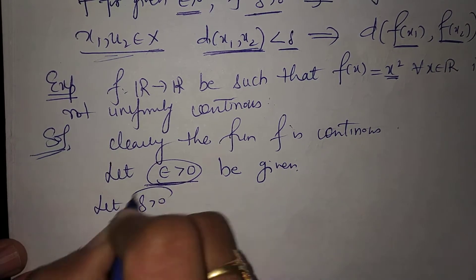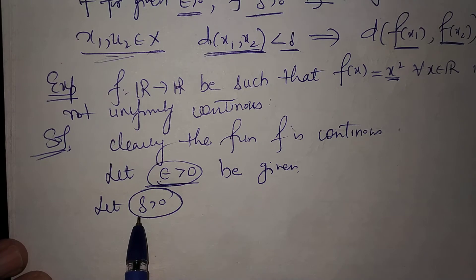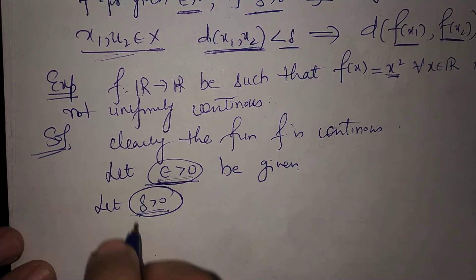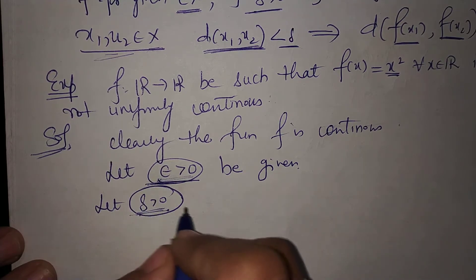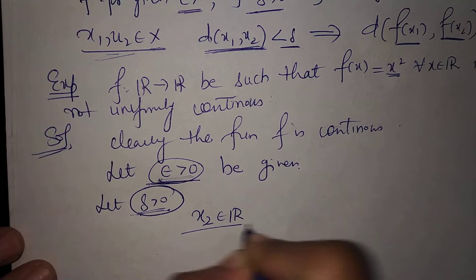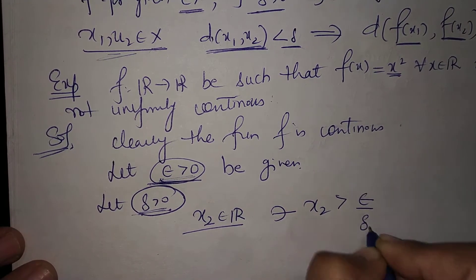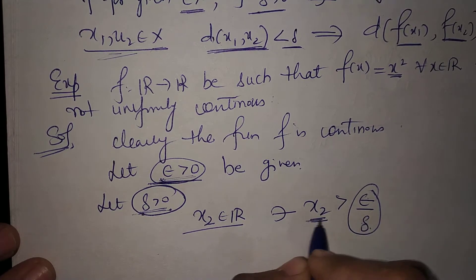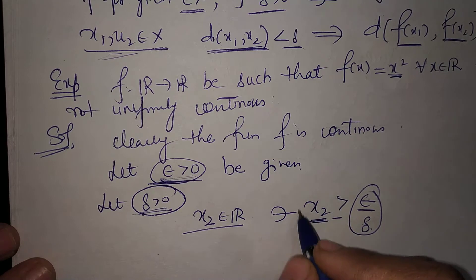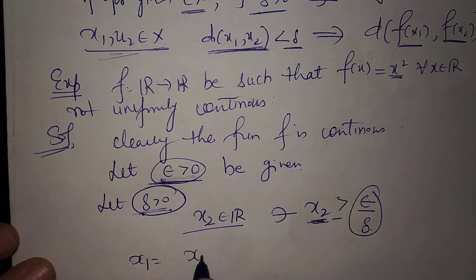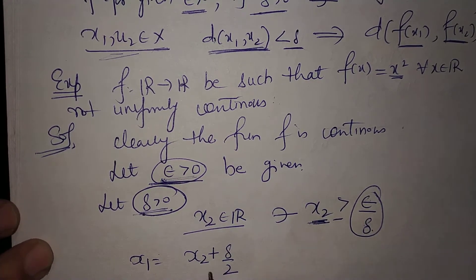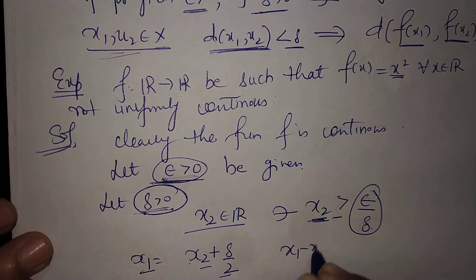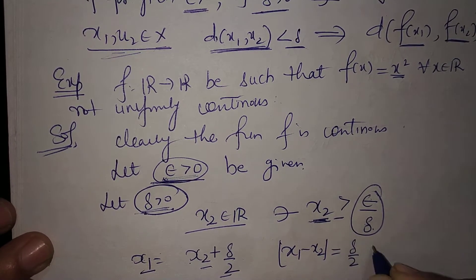We will show that this epsilon cannot be satisfied by any delta. I take x2 to be a real number such that x2 is greater than epsilon divided by delta. Now I define x1 to be x2 plus delta divided by 2. You can see that the modulus of x1 minus x2 equals delta by 2, which is less than delta. So x1 and x2 are two points whose distance is less than delta.